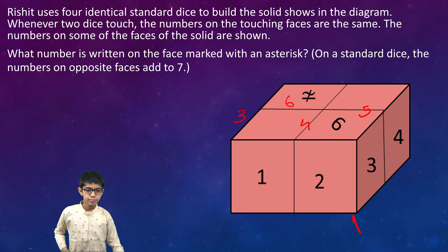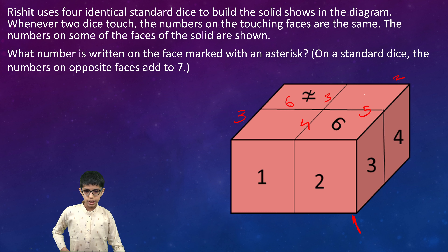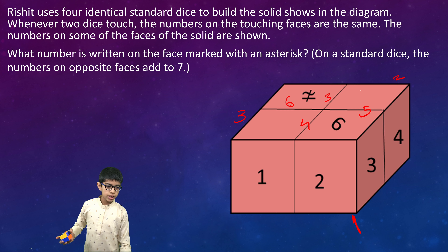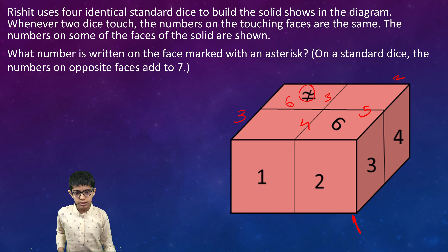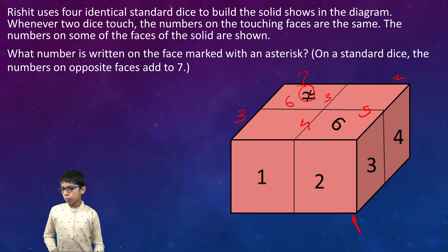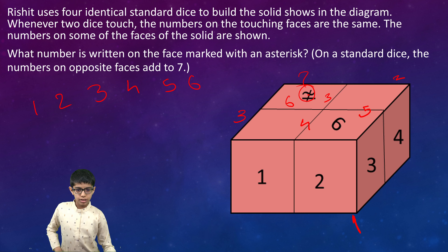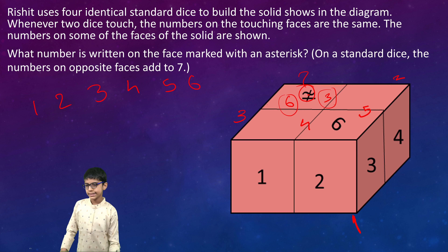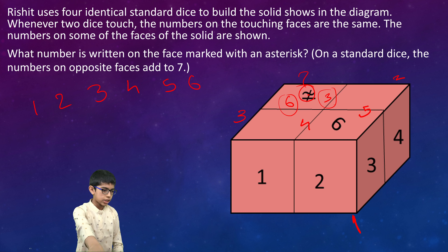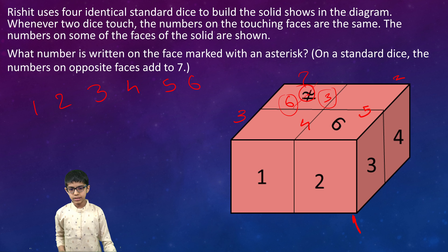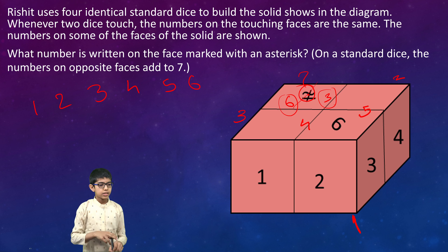Three plus four is seven, then five, then two. Now to find this question mark, what are the possible values? It must be one of: one, two, three, four, five, or six. But we can already see six and three on this small dice, so those are not the possible answers. Therefore, six and three will be cancelled.